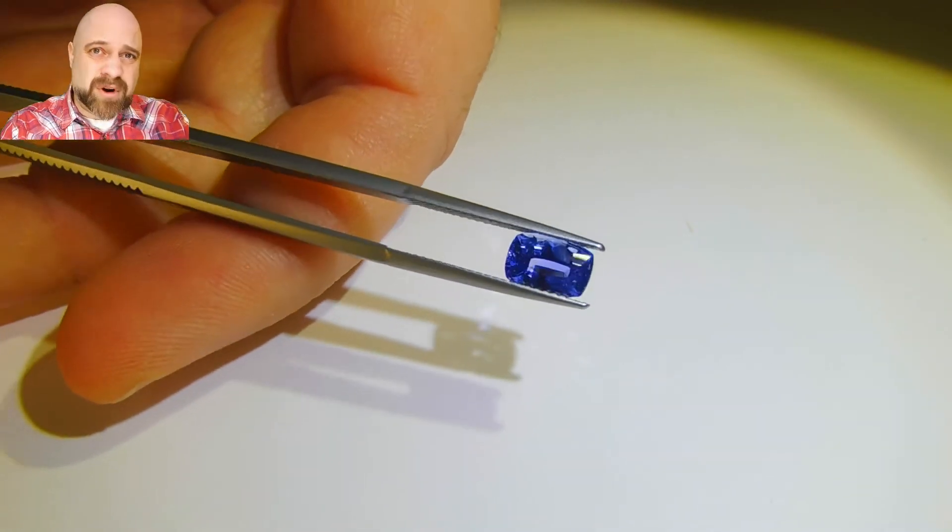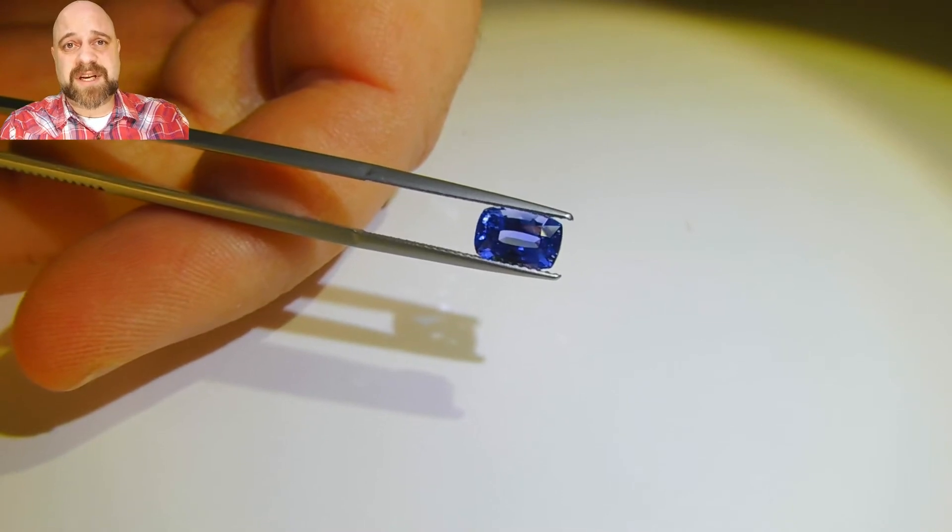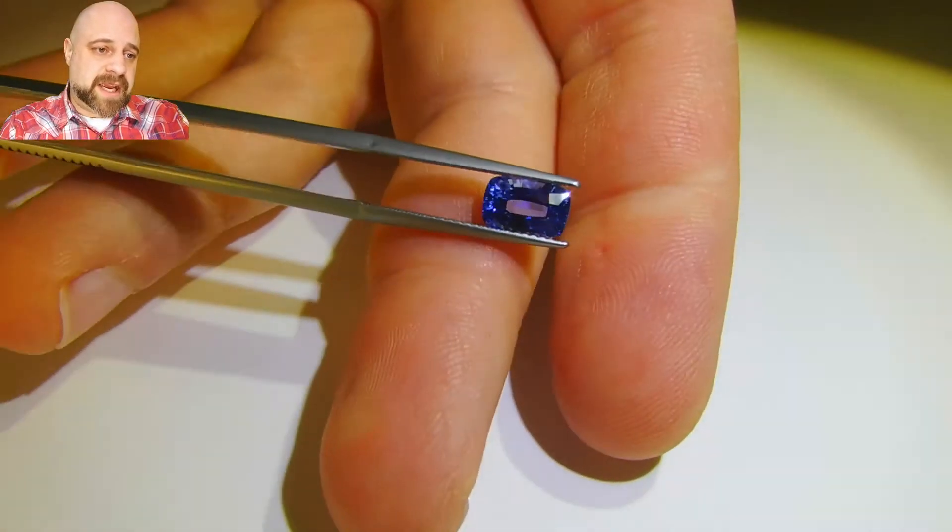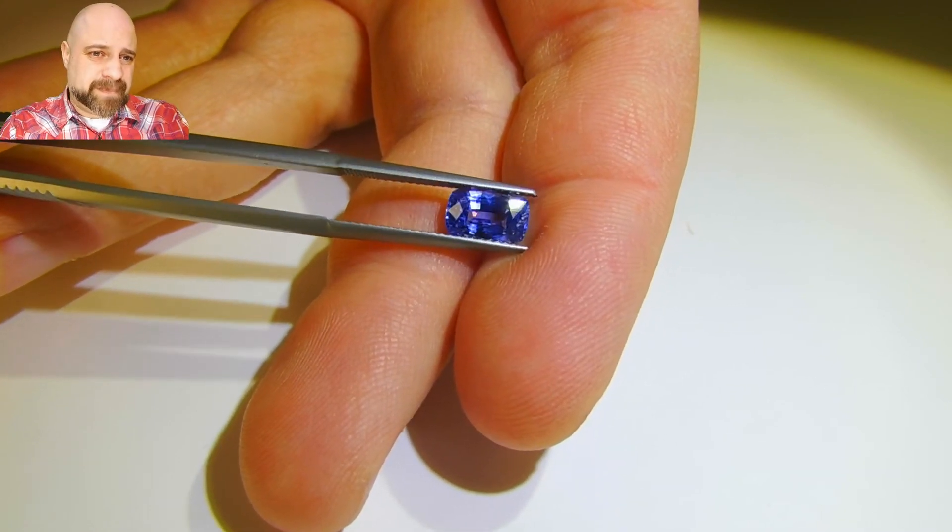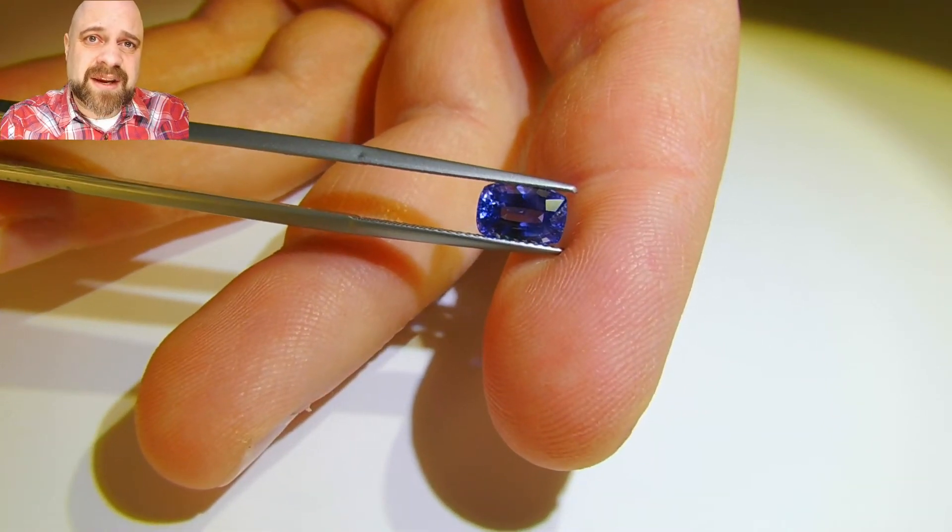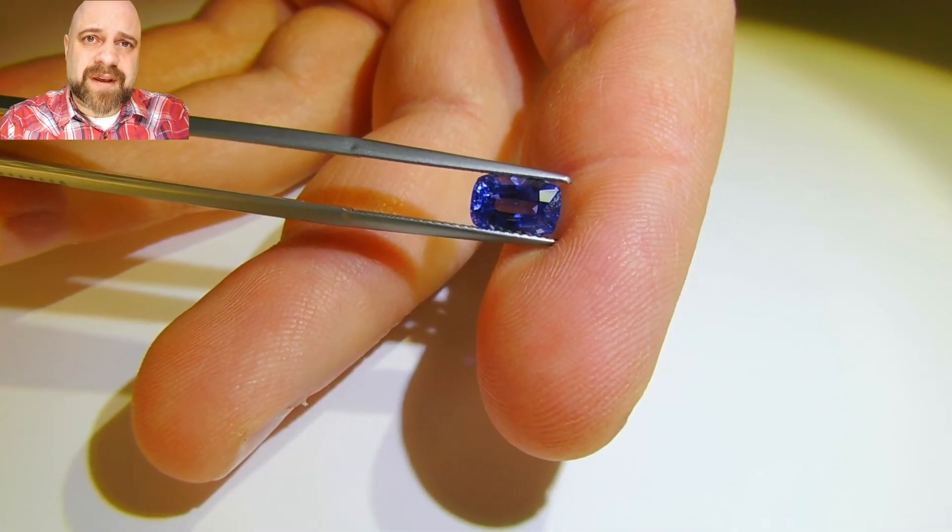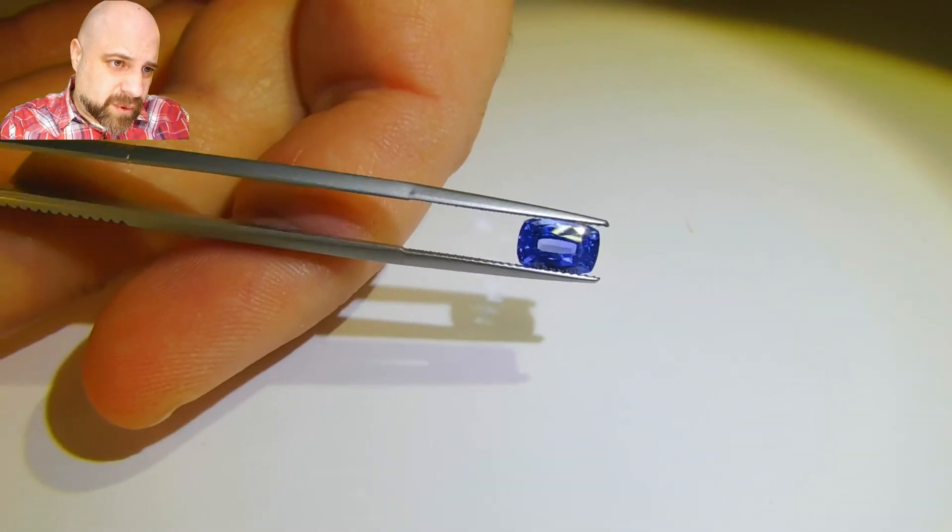This is something I would personally, I mean, I've seen a lot of sapphire. I've seen a lot of gems. I've seen a lot of jewelry. I would be extremely proud to be wearing. The color is really stunning. It's that classic cornflower blue, the classic Sri Lankan cornflower blue that you're looking for.